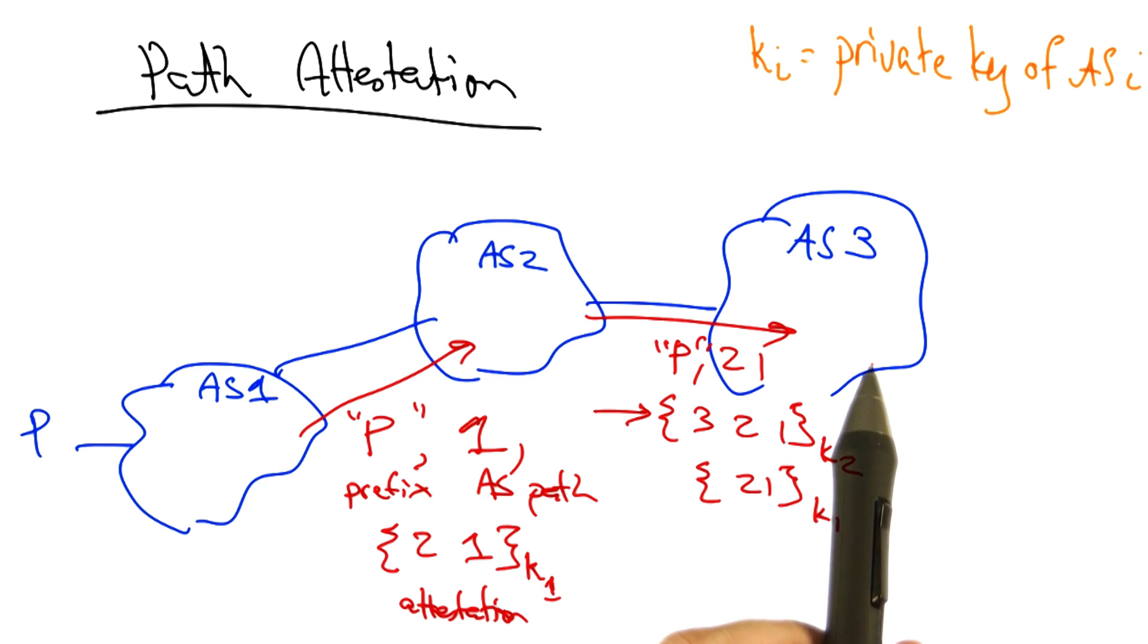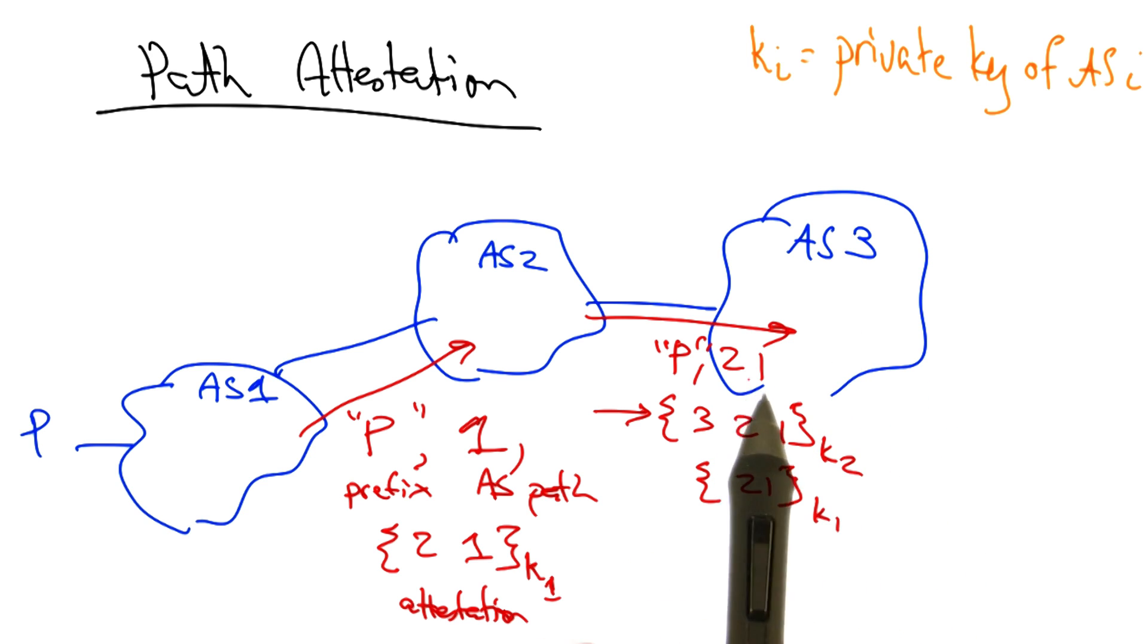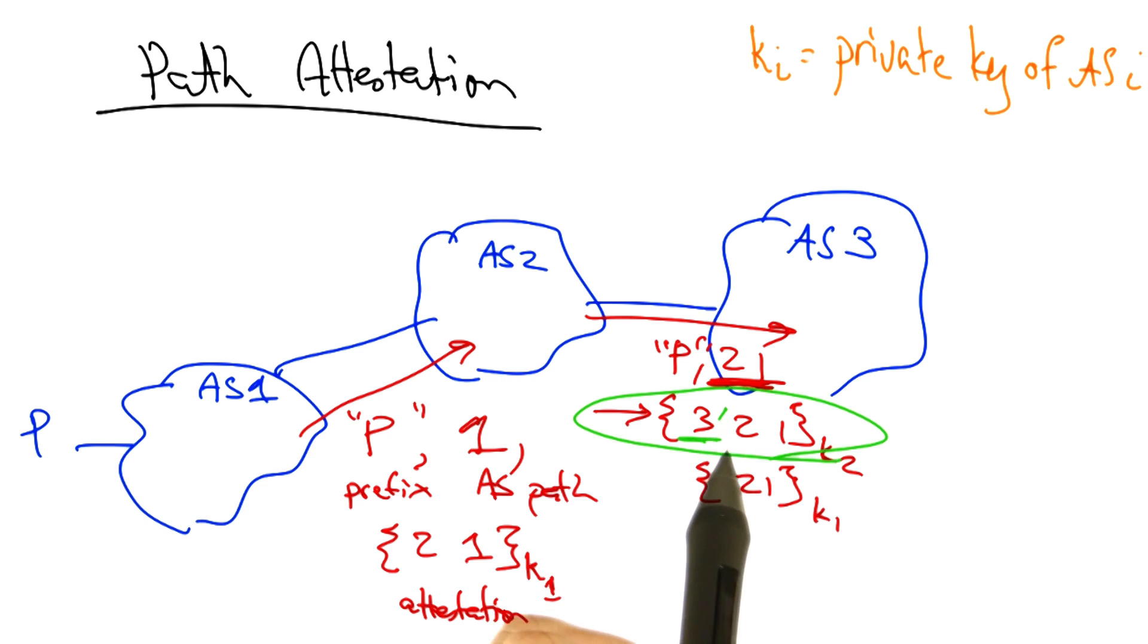A recipient of a route along this path can thus verify every step of the AS path. AS three can use the first part of the path attestation to verify that the path, in fact, goes from AS two to AS one and does not contain any other AS's in between. It can use the second part of the path attestation to ensure that the path between it, AS three, and the next hop is in fact AS two.